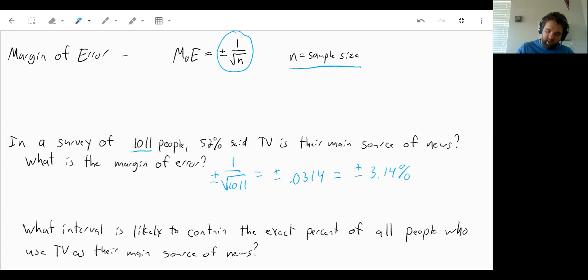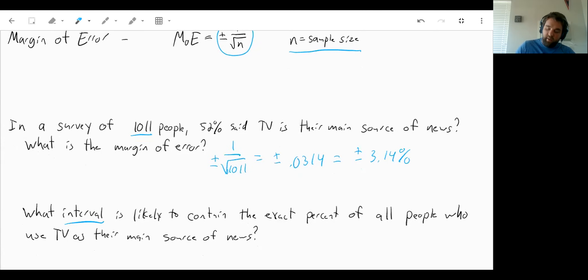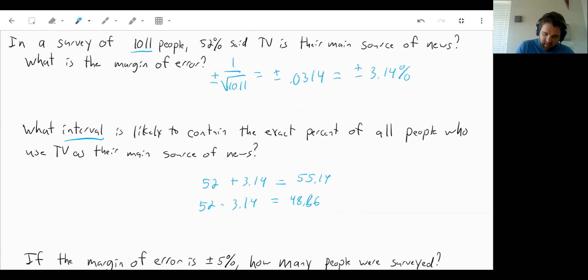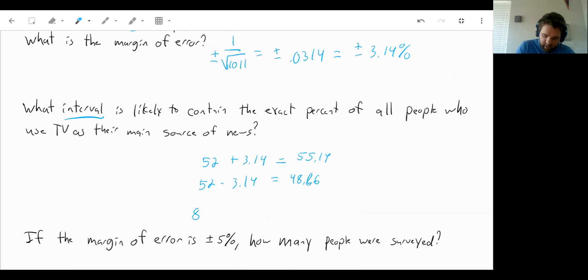So what that tells us is we can now figure out an interval that will likely contain the exact percent of all people who use TV as their main source of news. So we came up to a conclusion of 52%, but it could be 52 plus 3.14 or it could also be down to 52 minus 3.14. Well, that first one will come out to 55.14. The bottom one is going to be a 48.86. So the likely interval is going to be from 48.86 all the way up to 55.14.